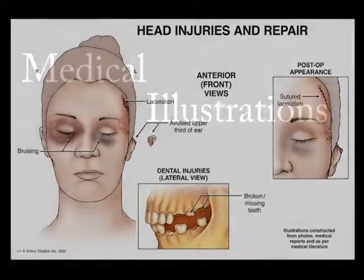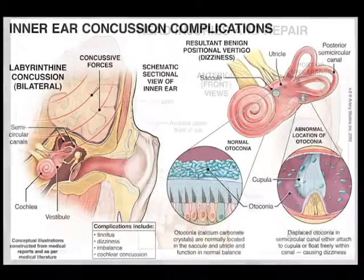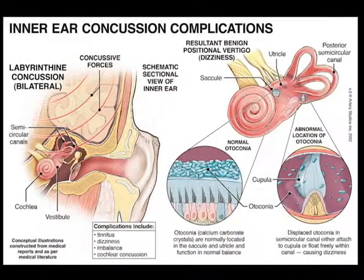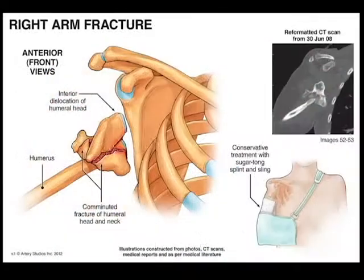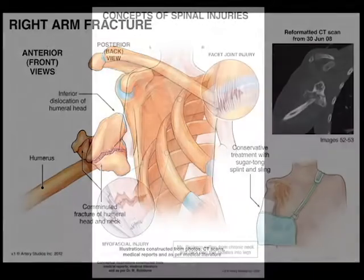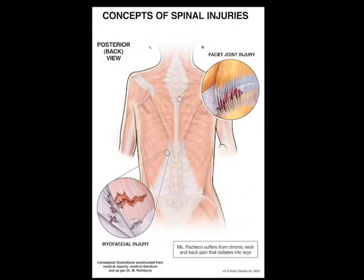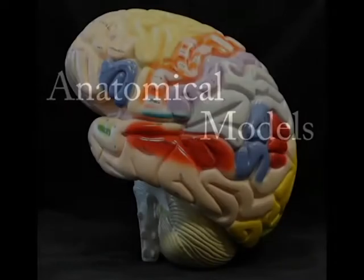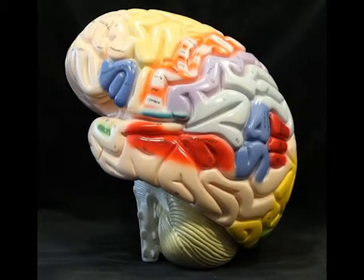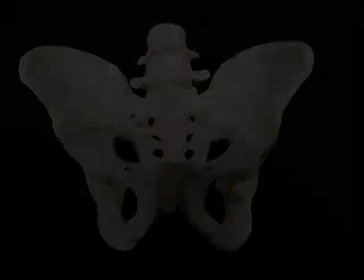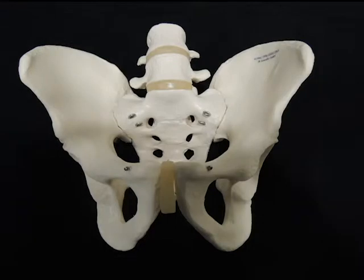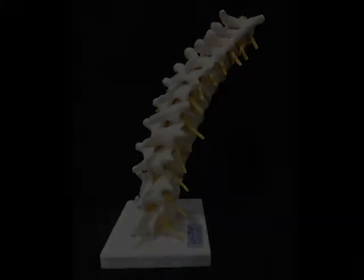We also use a medical illustrator to prepare illustrations. They review x-rays or MRI scans and draw the injury in color. These are used to understand exactly where the injury is. We use various anatomical models dependent on your specific injury, such as brain, pelvis, spine, and foot.